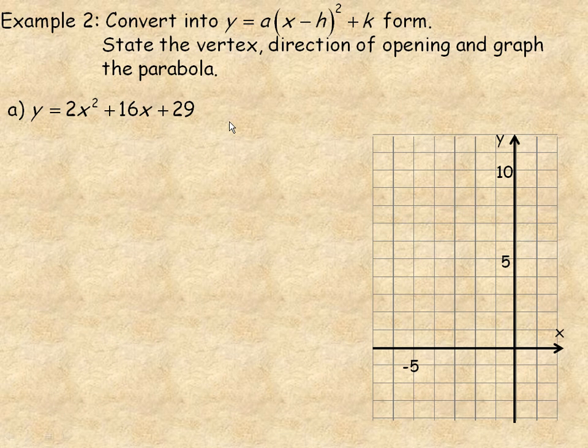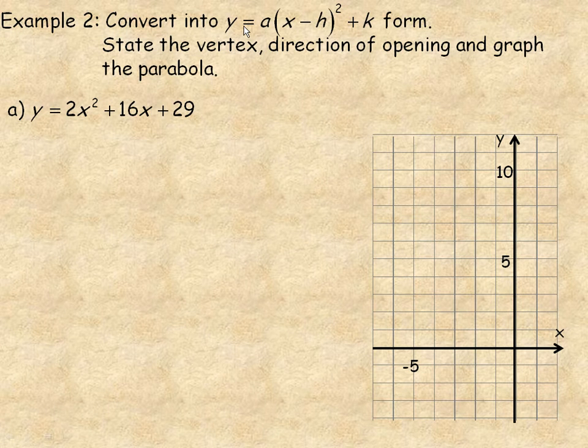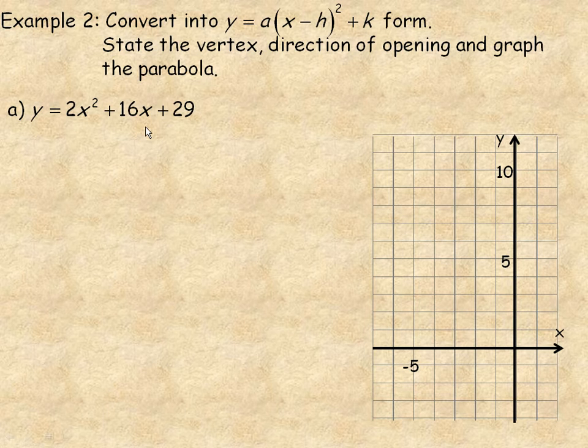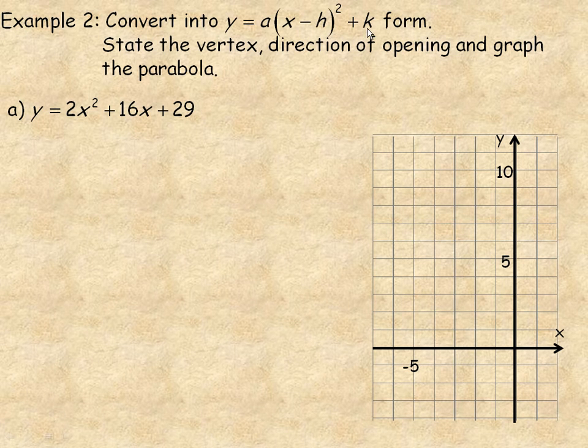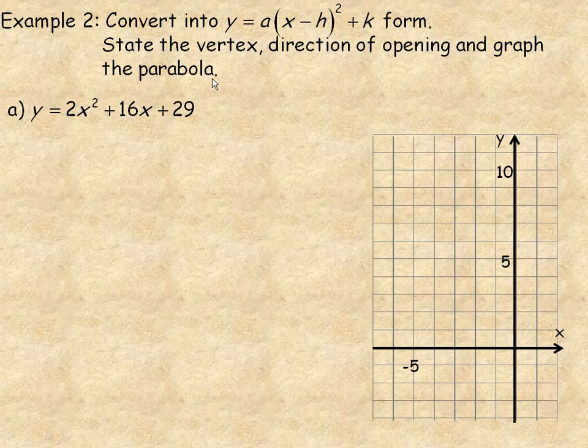Flipping over to the second page, in example number 2, we are going to convert each of these into vertex form: y = a(x - h)² + k. Then we are going to state the vertex, the direction of opening, and actually graph the parabola.